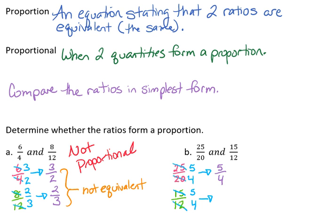Giving us a simplified ratio of 5 fourths. So here we compare these, and we see that they are equivalent. So because they are equivalent, we have that they are also proportional.